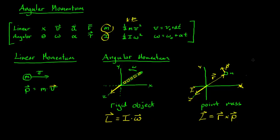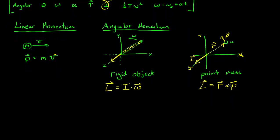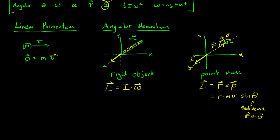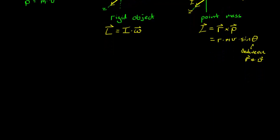These are our two equivalent equations depending on what you're dealing with. For a point mass, L equals R cross P, which using the cross product is R times mv times sine theta, where theta is the angle between the R and V vectors. For a solid object, we need the rotational inertia.